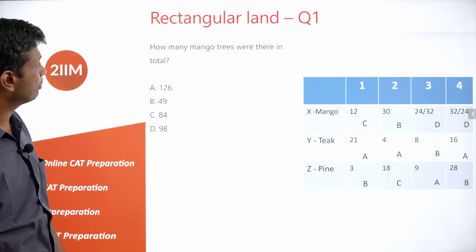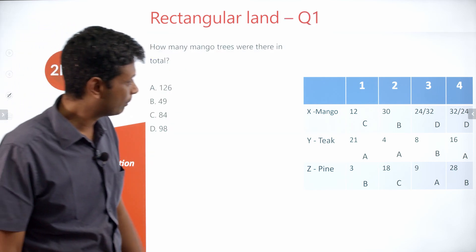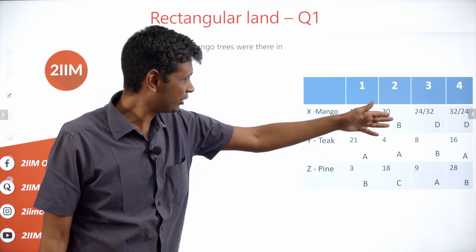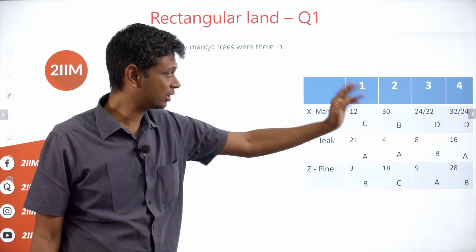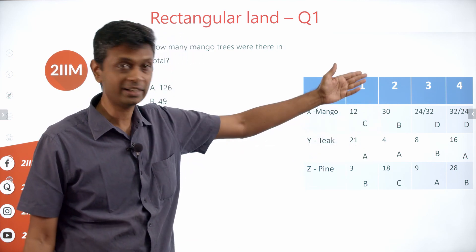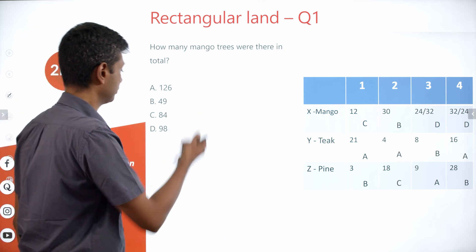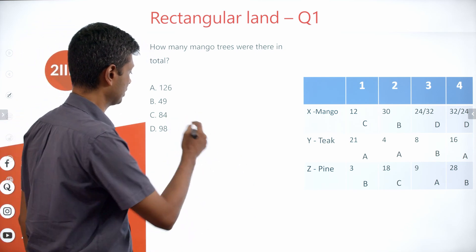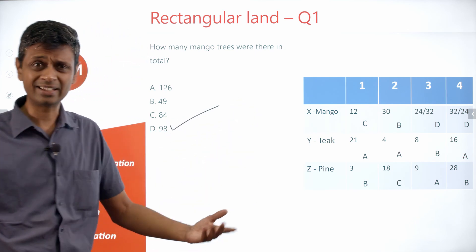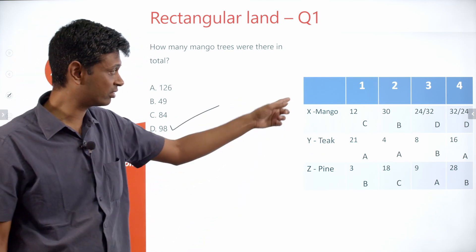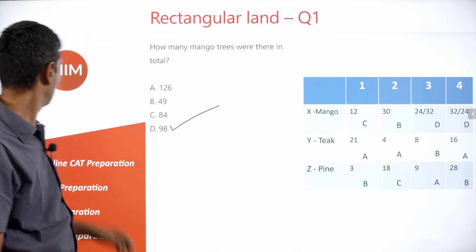Question 1: How many mango trees were there in total? We calculated teak as 49, so mango is twice that — 98 mango trees total.